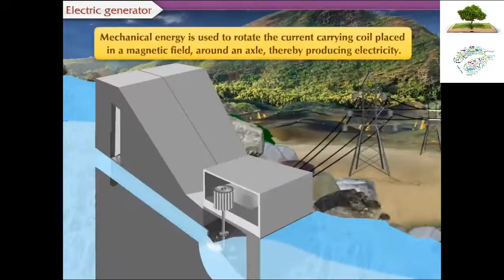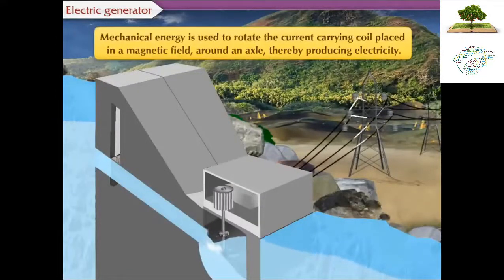Here, mechanical energy is used to rotate the current-carrying coil placed in a magnetic field around an axle, thereby producing electricity.